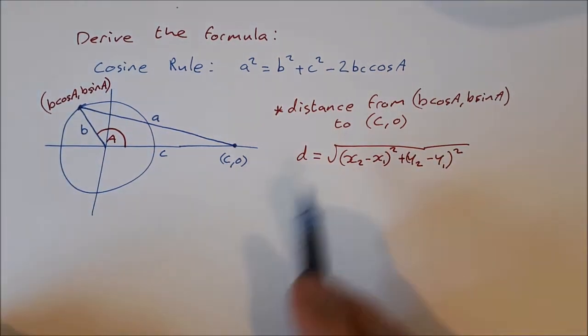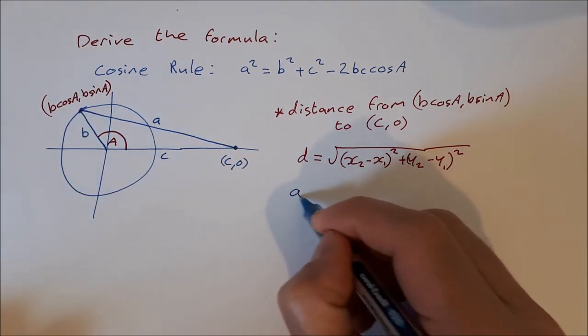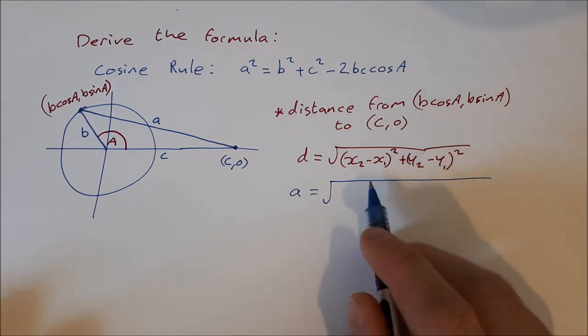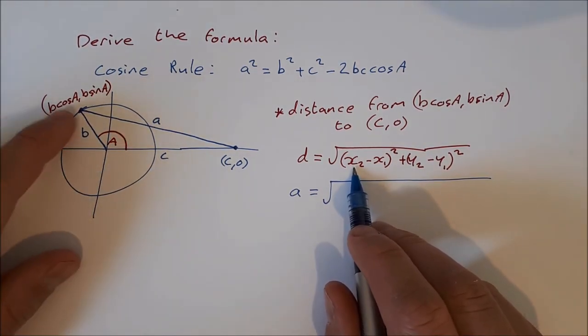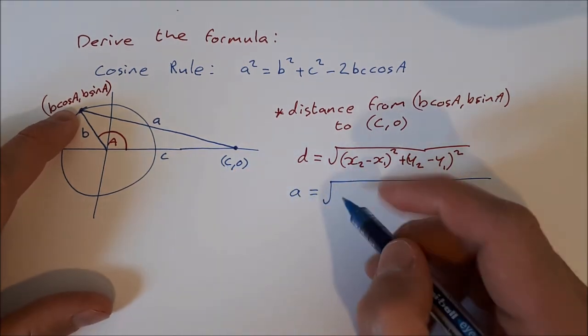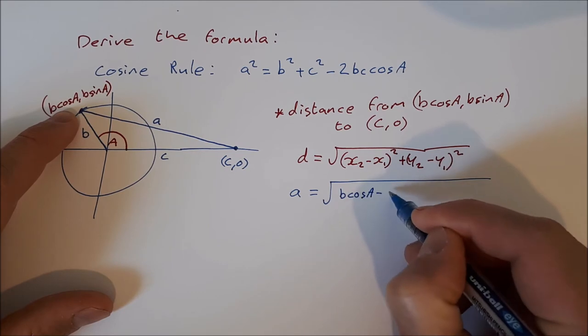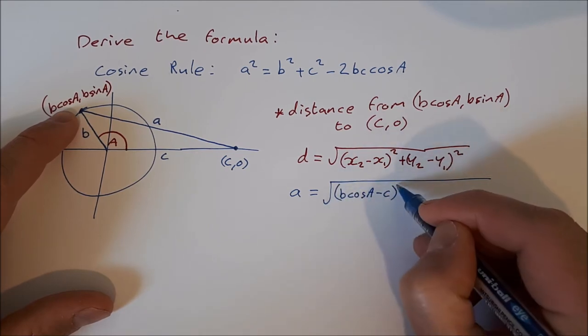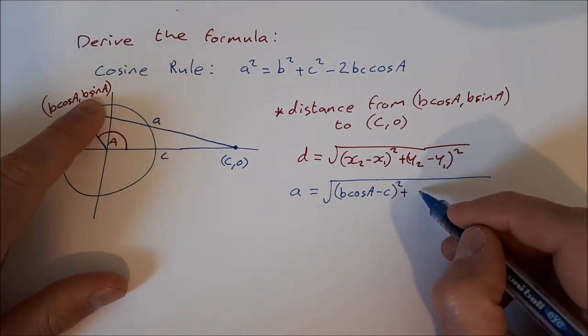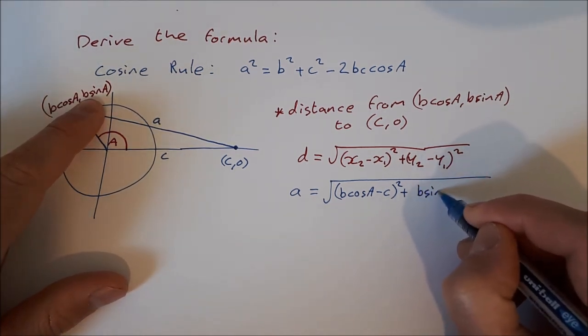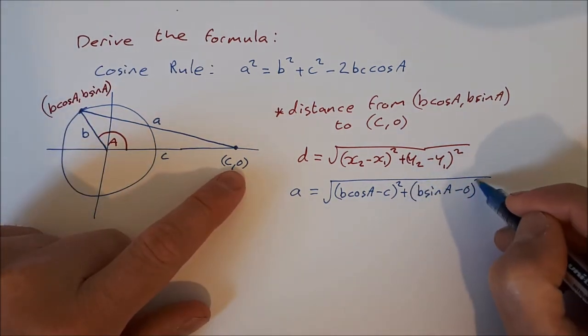So our distance d is this distance here, so that's a equal to the square root of x2 minus x1, so that's b cos A minus c, b cos A minus c in brackets to be squared, plus y2 minus y1, so that's b sin A minus 0 squared.